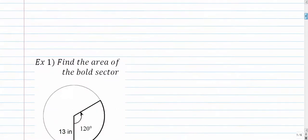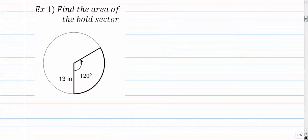Let's try a few. Number one, find the area of this bold sector. So we're looking for this area right in here. So to find that, we want to set up our proportion. x is what we're looking for. That's the area of the sector.